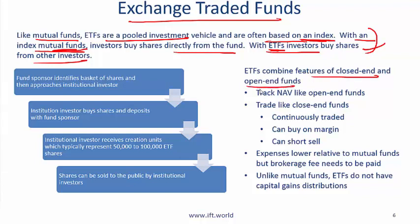Exchange traded funds combine features of closed-end and open-end funds. They are close to open-end in that they generally trade close to NAV. In order, open-end funds are closest to NAV, then ETFs, then closed-end funds. ETFs track NAV like open-ended funds but trade like closed-ended funds — you can buy and sell all day long, whereas with open-ended funds you only buy or sell at end of day. You can also buy ETFs on margin; with open-end funds you cannot.